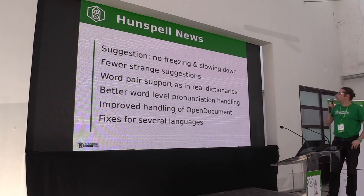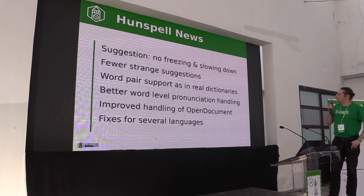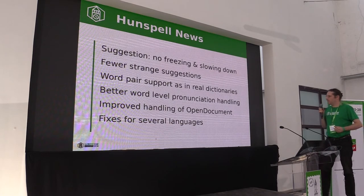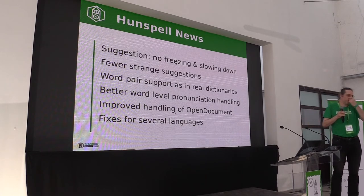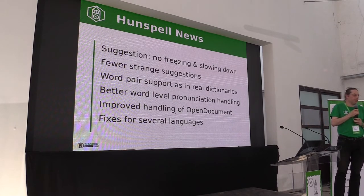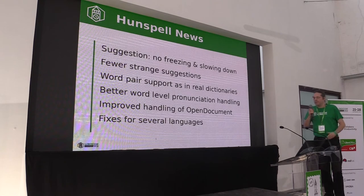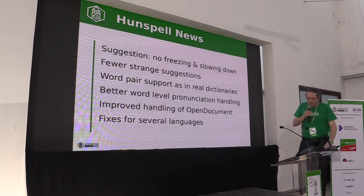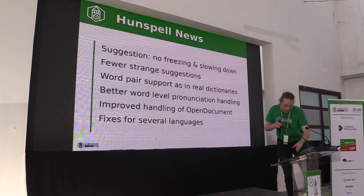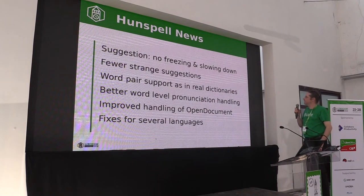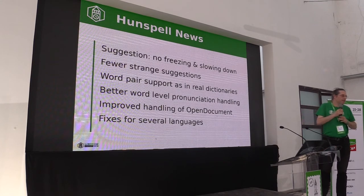About Hunspell, the good news is that it is much faster — much more faster indeed — at generating suggestions for some languages, especially languages with complex morphology, such as German, Hungarian, Norwegian, and Dutch. English was already fast enough before, so the improvement is mainly for morphologically complex languages.